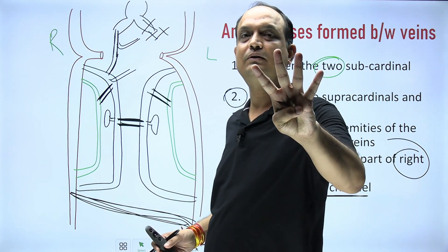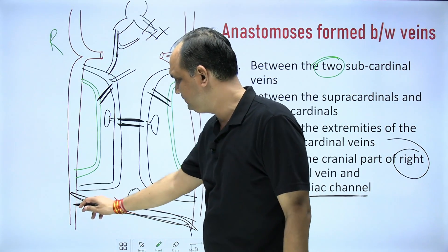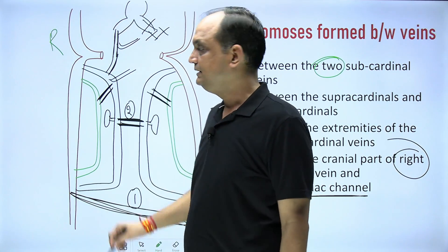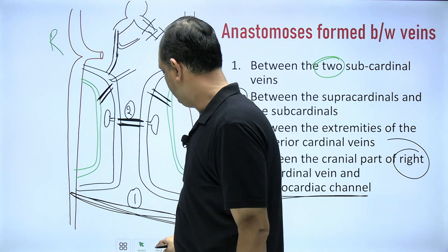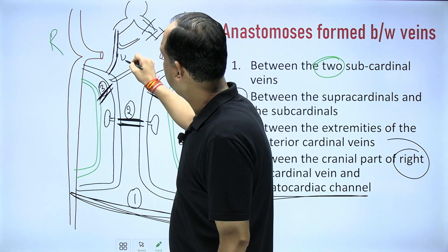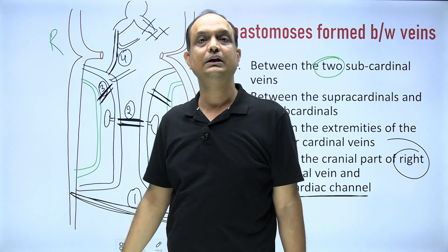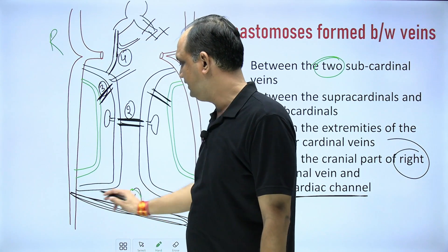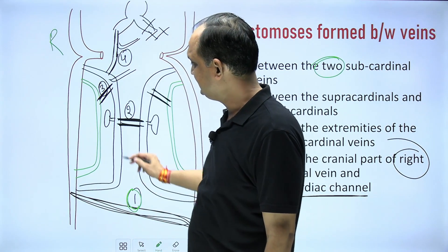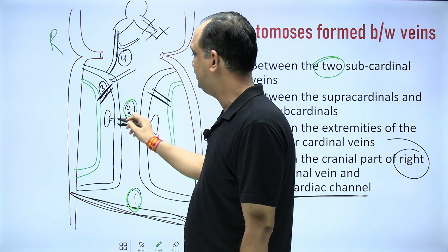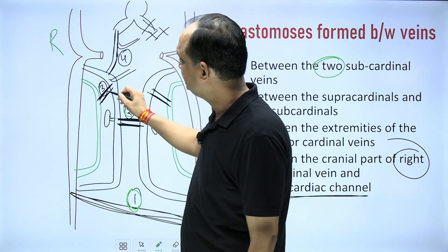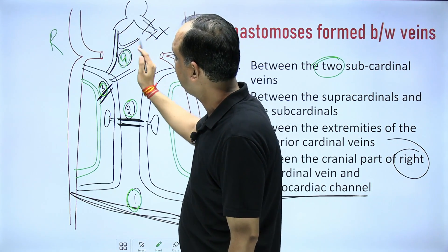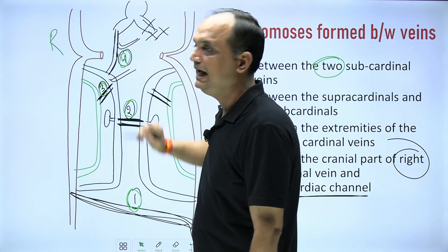Four anastomoses must be drawn in the exam: first, between the lower end of right and left posterior cardinal veins; second, between the two sub cardinal veins (midline); third, between right sub cardinal and right supra cardinal vein; fourth, between right sub cardinal and right hepatocardiac channel. These four anastomoses are the key factors in understanding the development of inferior vena cava, because some parts of these veins will persist and some will disappear to form the adult IVC.